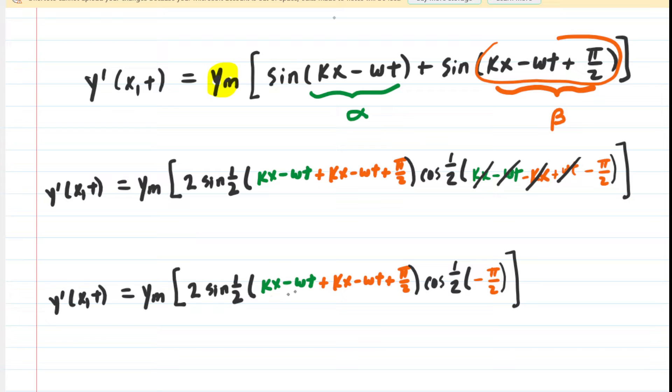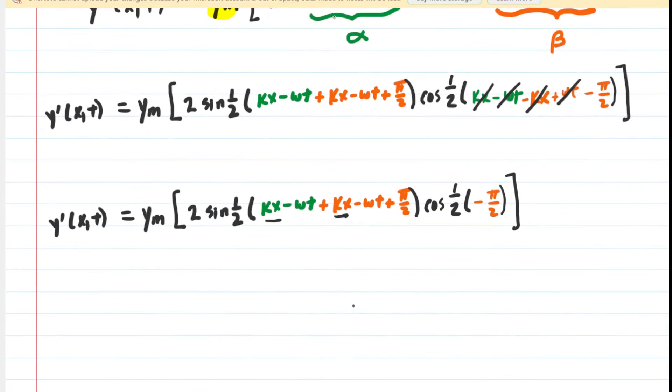Let's take a look inside the parentheses over here. We have kx plus kx, that'll give us 2kx. And then we have a negative ωt and a negative ωt. That's going to give us negative 2ωt.